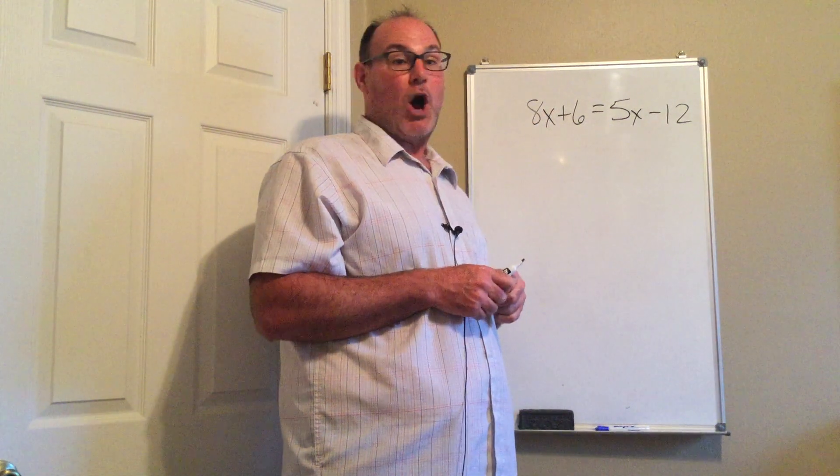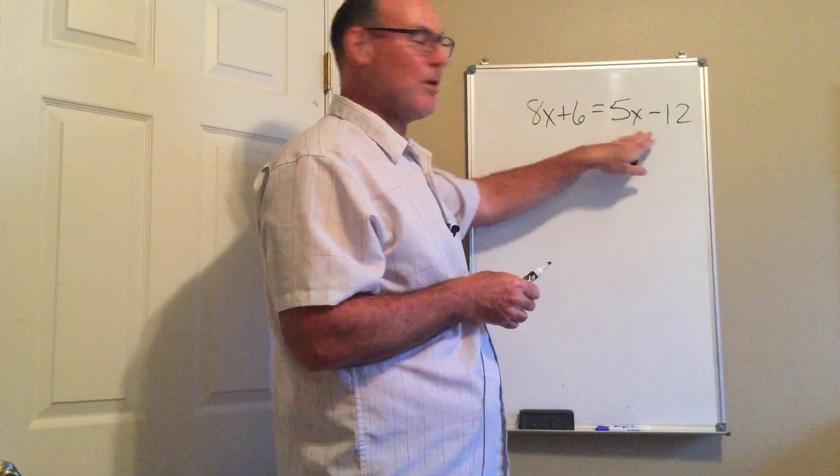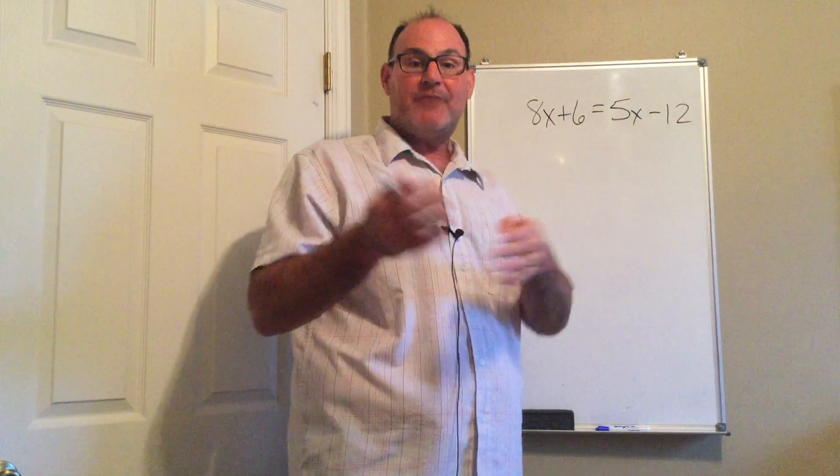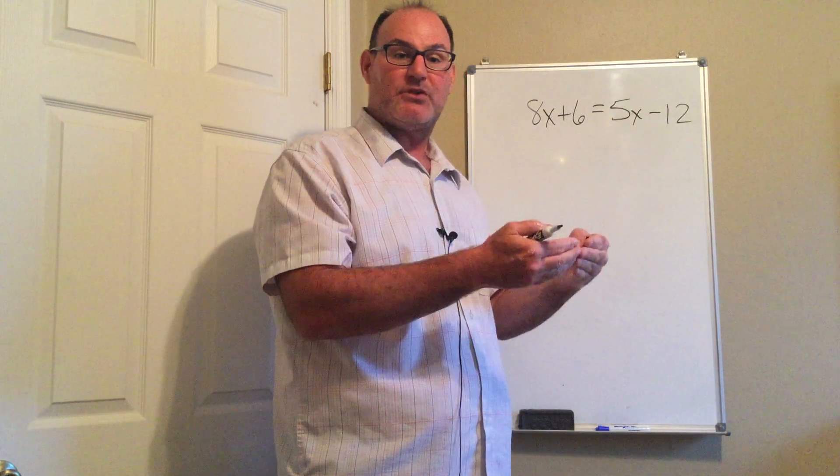This is an example of the hardest equation I could ever have you solve. I've got X's on both sides of the equal sign, I've got numbers on both sides. What you have to do is choose which side of the equation you want the X's on and the numbers.